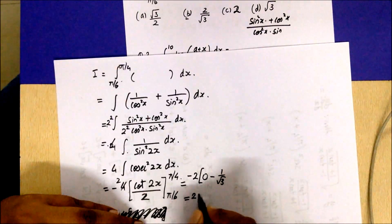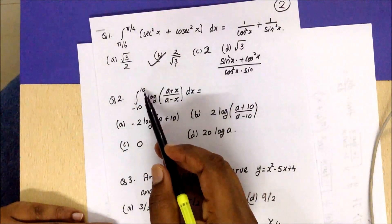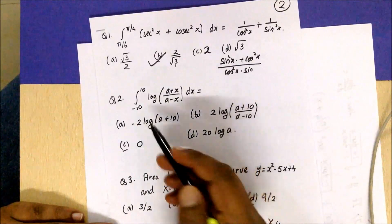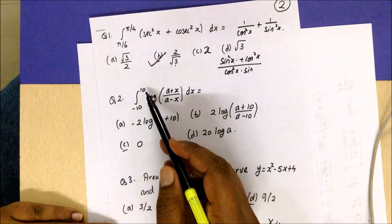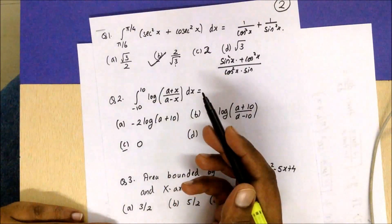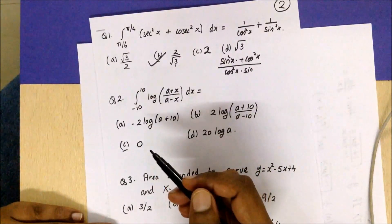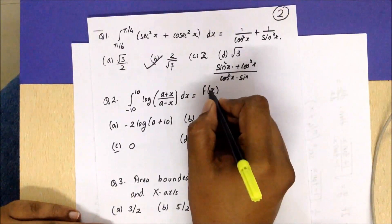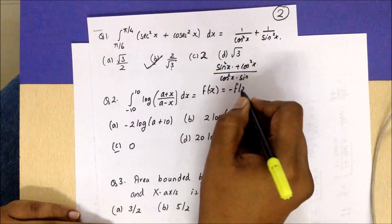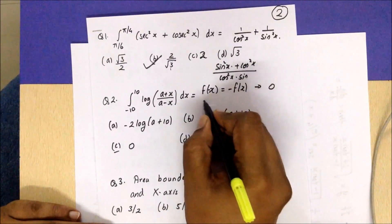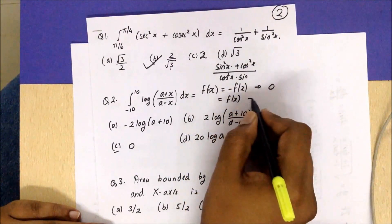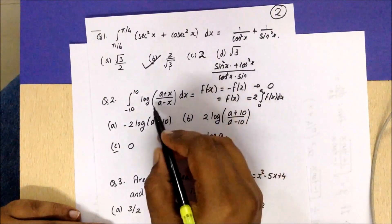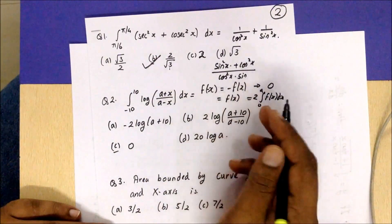Moving to the next one: we have the integral from −10 to 10 of log((a+x)/(a−x)) dx. You can see the limits are −10 to 10. Whenever you have such limits −a to a, you have to check for even and odd functions. To recollect: if substituting x as −x gives −f(x), the integration is 0; if it gives f(x), it will be twice the integration from 0 to a of f(x) dx. Let us check whether the given function is even or odd.